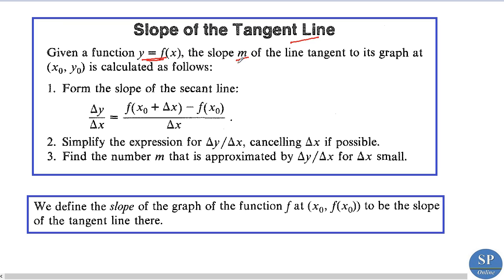To find the slope of the tangent line for a given function y equal to f of x, the slope m of the line tangent to the graph at the point x₀ comma y₀ is calculated as follows. First, form the slope of the secant line: delta y by delta x equals f of x₀ plus delta x minus f of x₀ divided by delta x. Next, simplify this expression, cancelling delta x if possible. The number m approximated by delta y by delta x for very small delta x is called the slope of the tangent line.